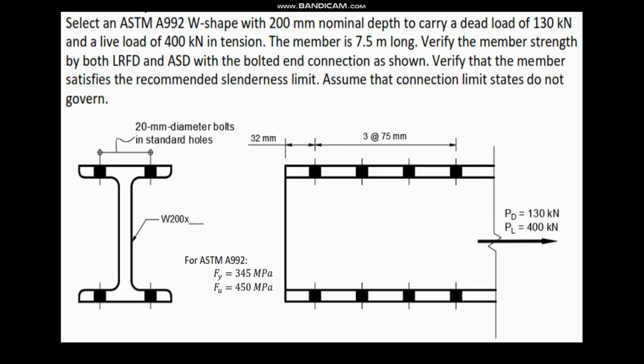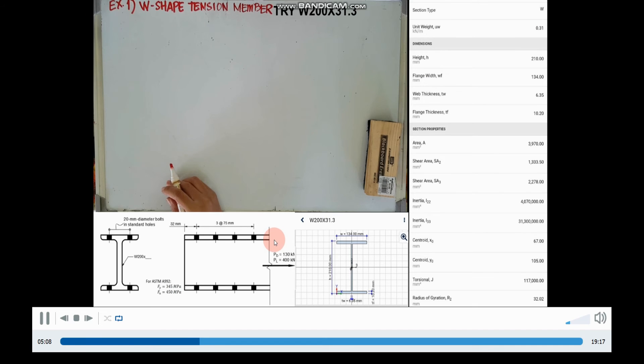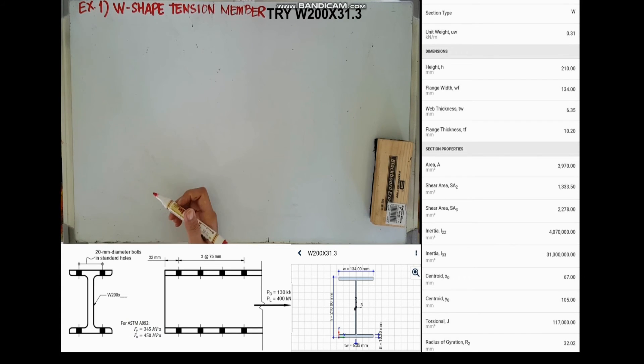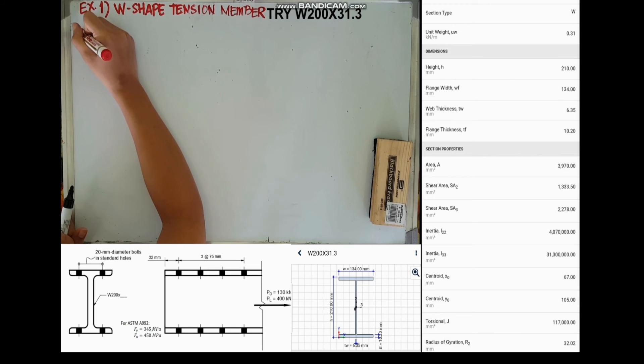The member is 7.5m long. Verify the member strength by both LRFD and ASD with the bolted end connection as shown. Verify that the member satisfies the recommended slenderness limit and assume that connection limit states do not govern. For ASTM A992, our yield stress is 345MPa and our tensile strength is 450MPa.